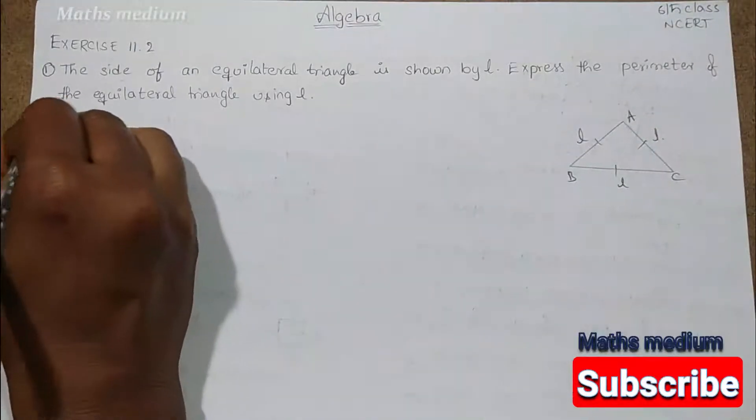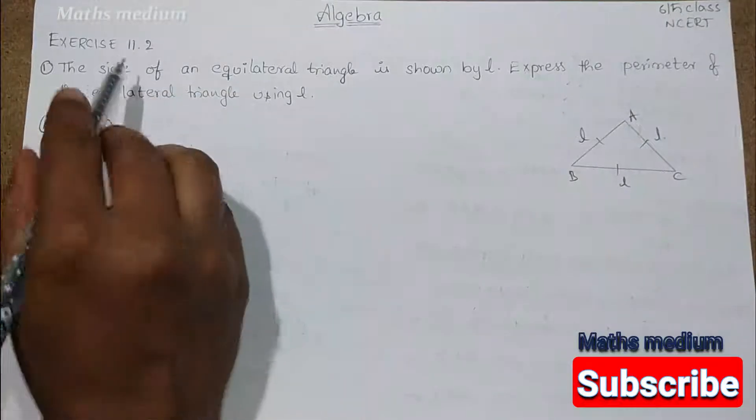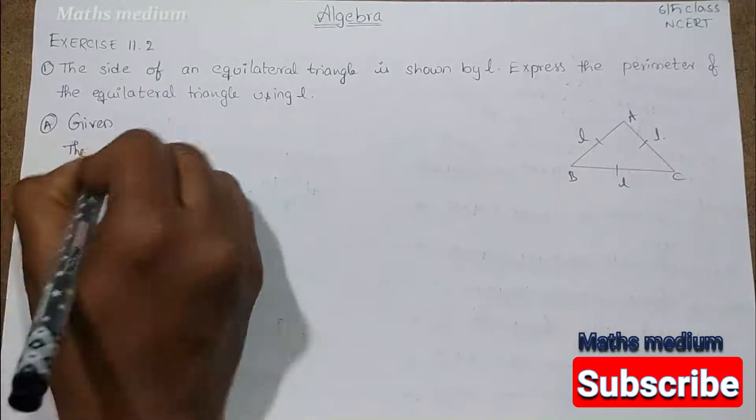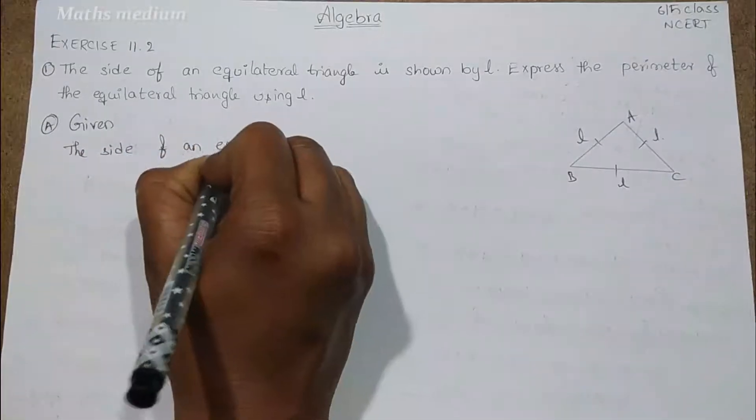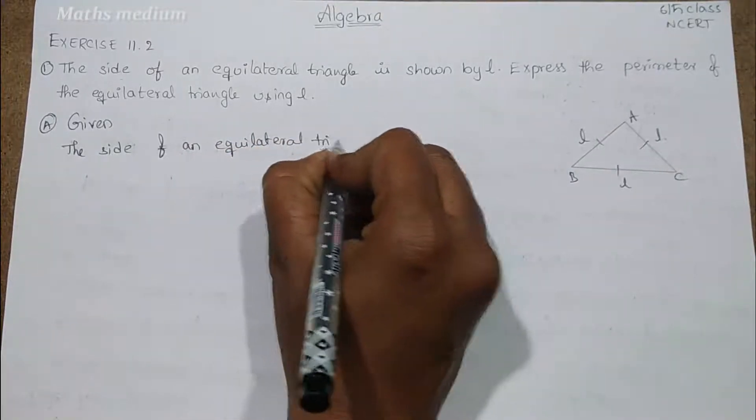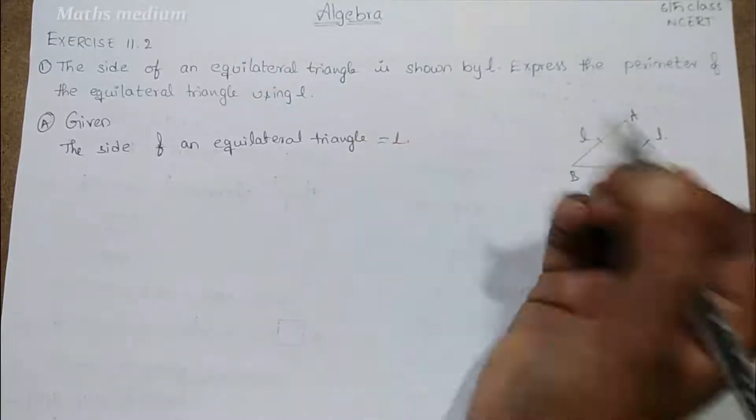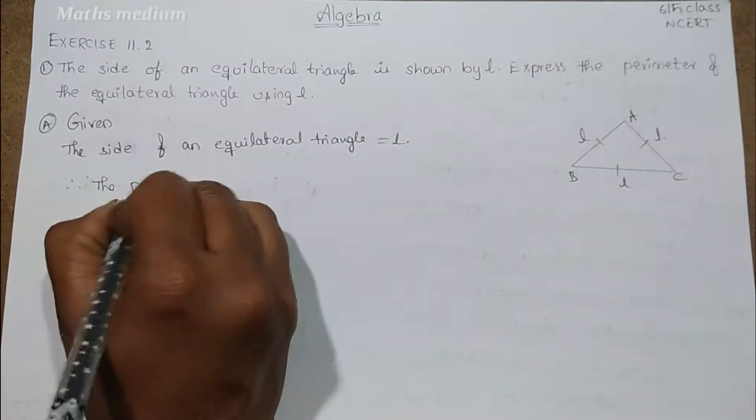Here, given that the side of an equilateral triangle is equal to L. Therefore, the perimeter of the equilateral triangle is equal to side 1 plus side 2 plus side 3.